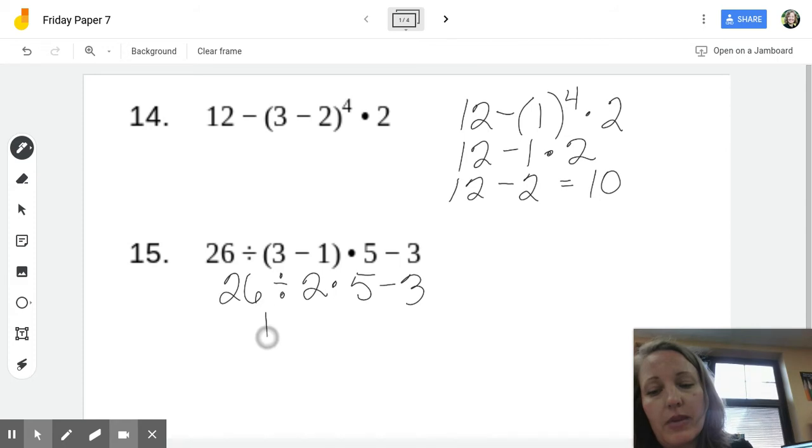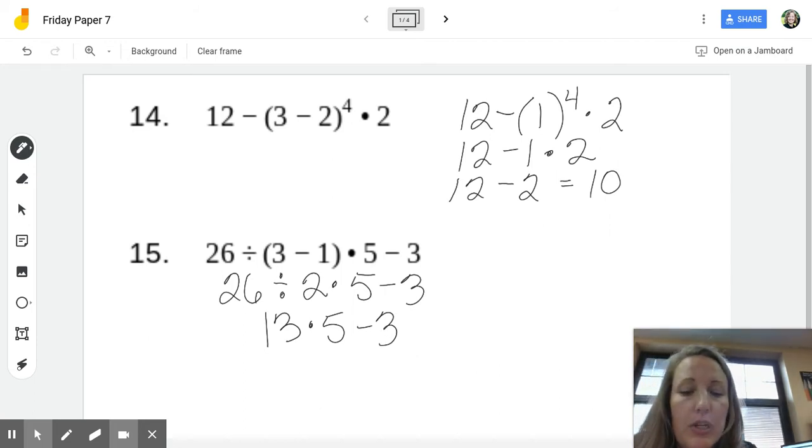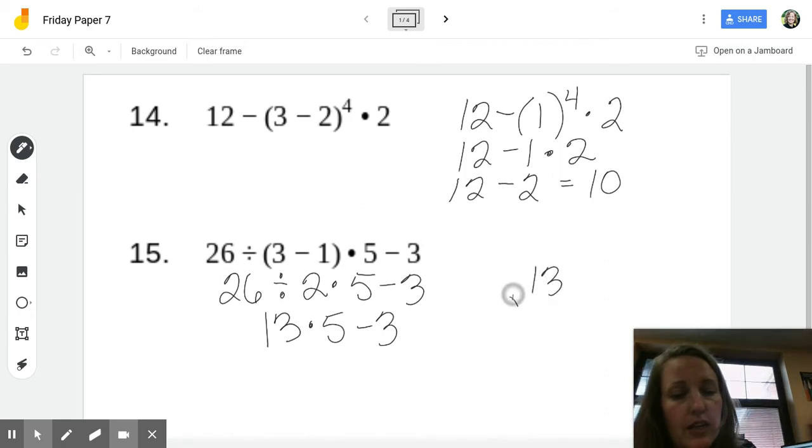26 divided by 2 is 13 times 5 minus 3. That's our new problem. Okay, this is an expression. It's a numerical expression, and we're evaluating it. So, now I have multiplication and subtraction. So, order of operations says we multiplied first. 13 times 5.